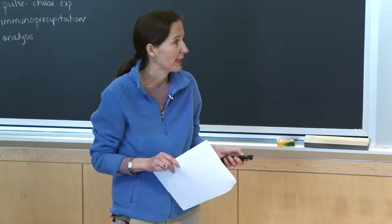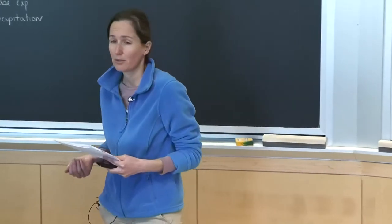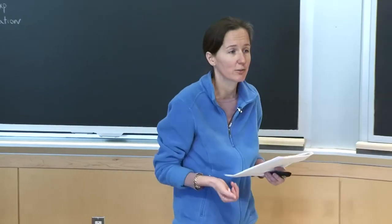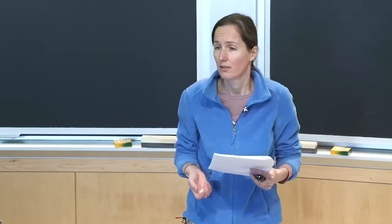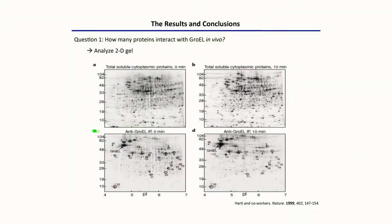Many spots, right? And we see many spots both at 0 minutes and at 10 minutes. The E. coli genome encodes over 4,000 proteins, roughly 4,300. If one were to go and count all of these spots, we see on the order of 2,500 — they detected on the order of 2,500 different cytoplasmic proteins on these gels.